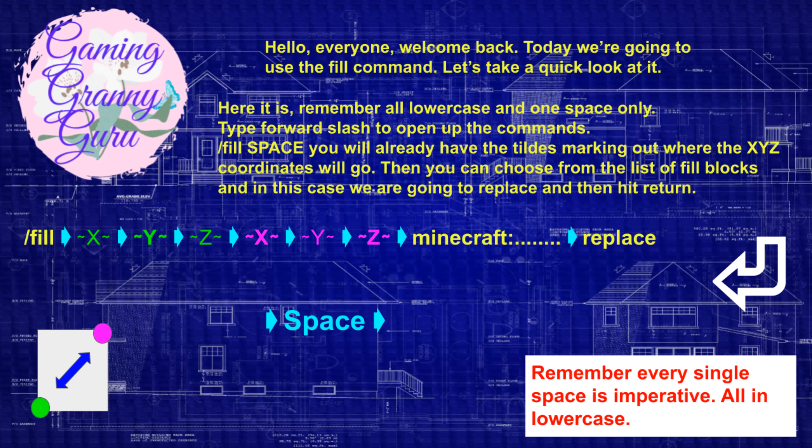We type in our first coordinate at minus 3, because that's where we want our sand layer. Then our second coordinates again at minus 3, because we only want one layer of sand. Then we'll choose our sand. I'll type in Minecraft colon S and then choose sand from the list. Then in the list we have many options but what we want is replace, because we want the blocks that are already there replaced with the block that we're putting in. And hit return.